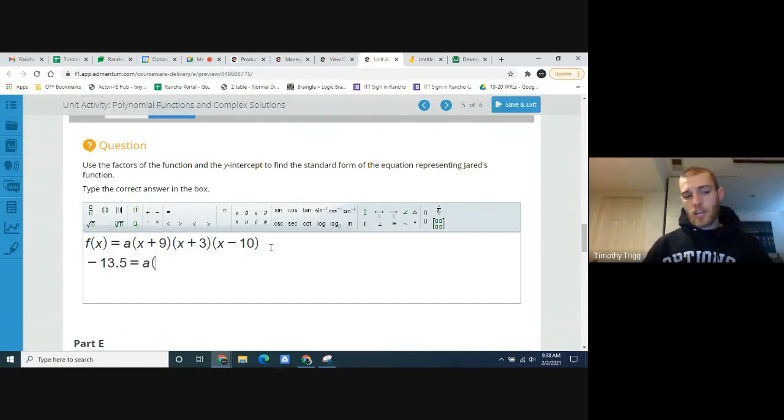So what we can do is we could say negative 13.5 equals a. Now, since it's a y-intercept, all the x values will be 0. So this will be 0 plus 9, 0 plus 3, and 0 minus 10. So for the y-intercept, we'll replace all the x's with 0. So that'll give us negative 13.5 equals a times 9, because 0 plus 9 is just 9, times 3, because 0 plus 3 is just 3, times negative 10. 0 minus 10 is negative 10.